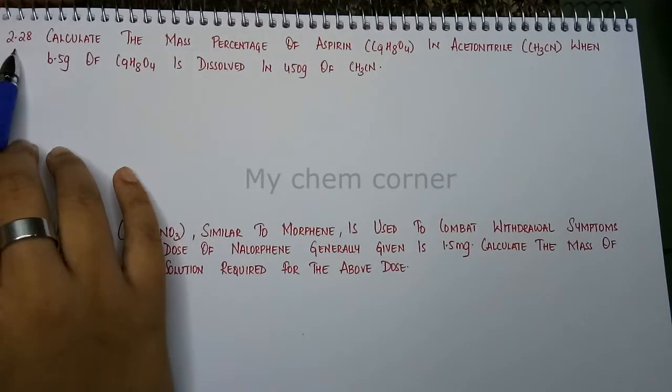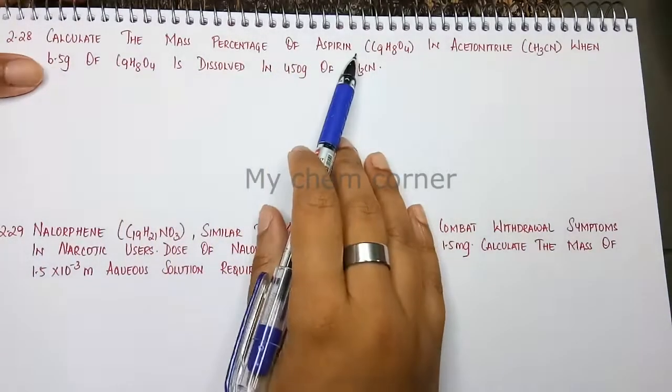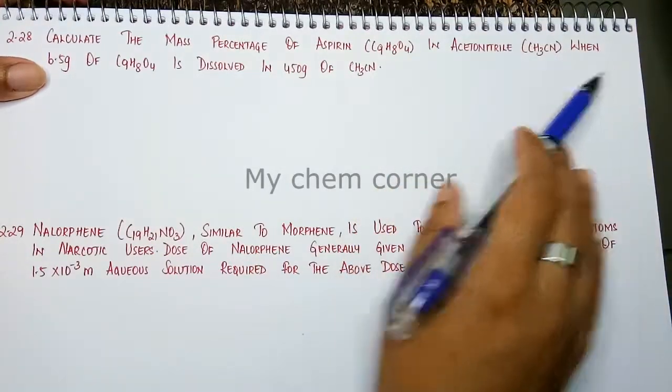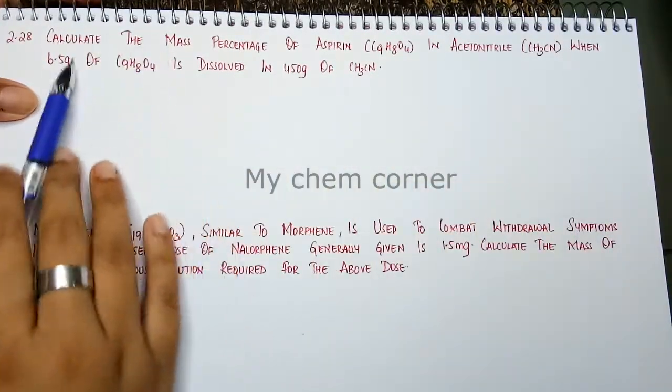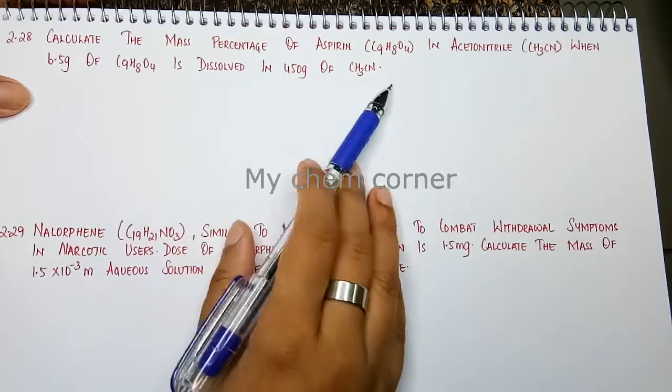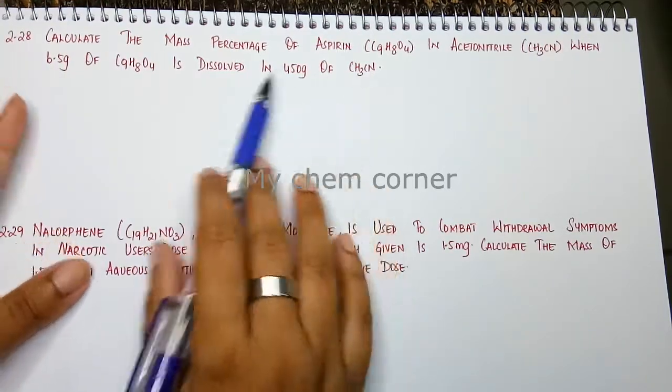Next question is question number 2.28. Calculate mass percentage of aspirin in acetonitrile when 6.5 grams of aspirin is dissolved in 450 grams of acetonitrile. Very simple question.